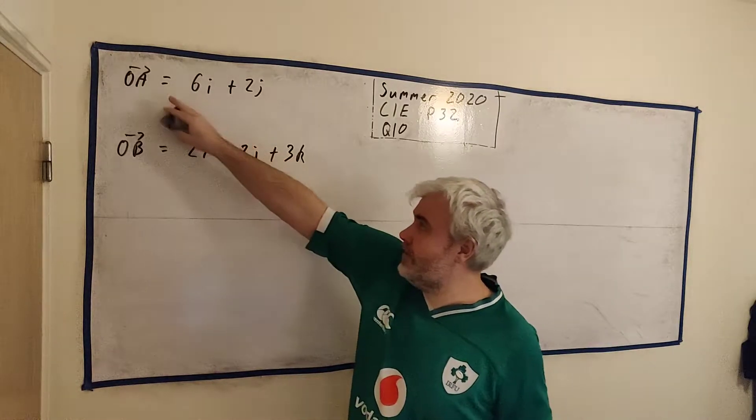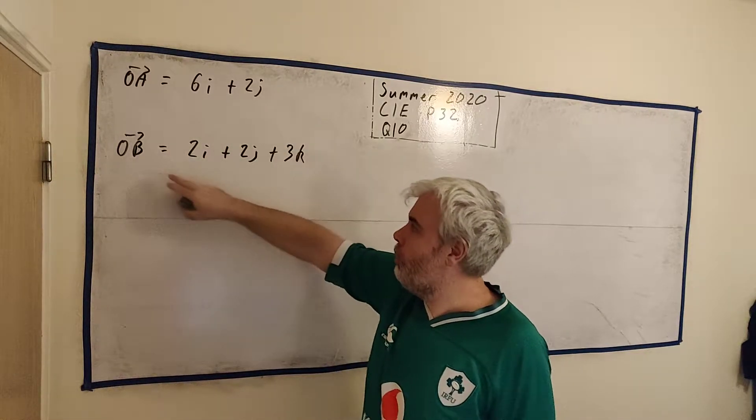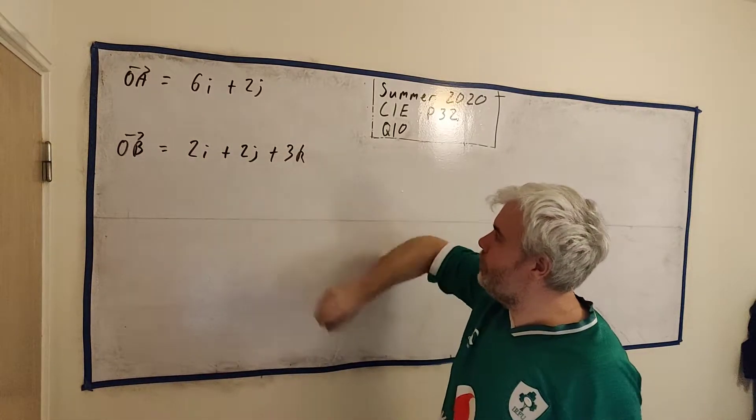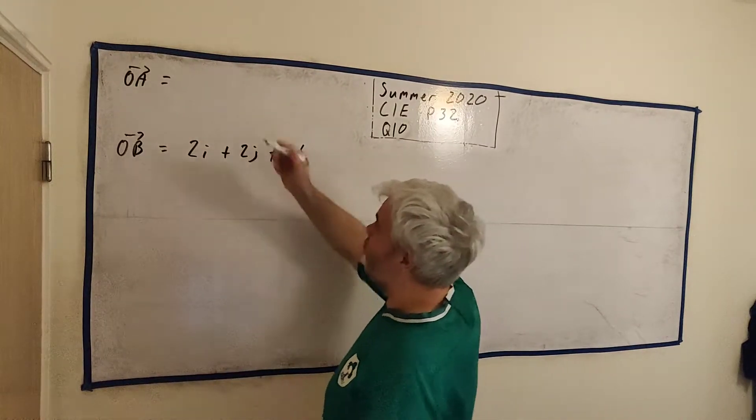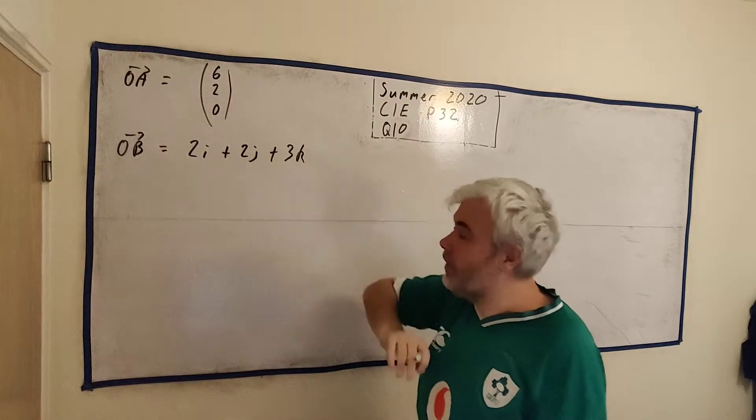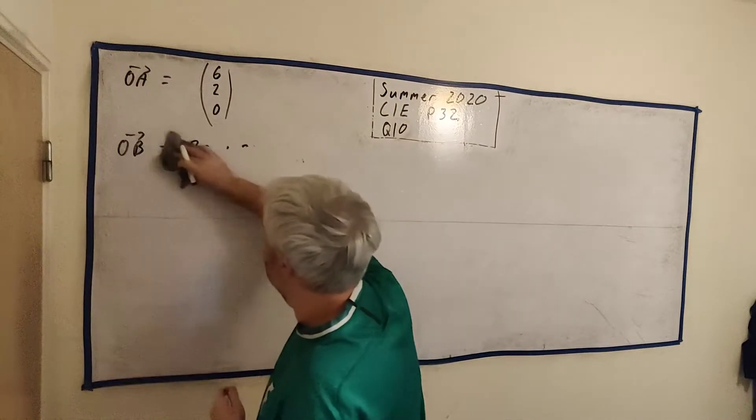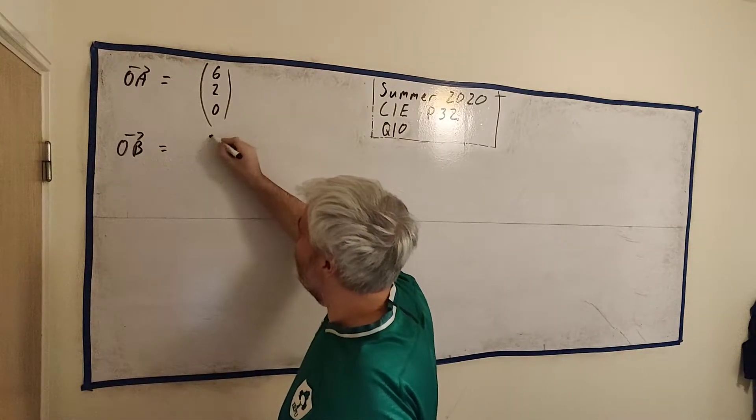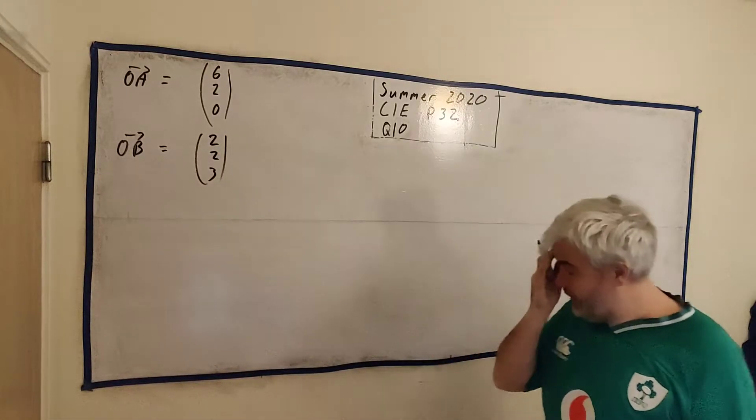First thing I'm going to do, this is the vectors they gave us. OA is equal 6i plus 2j. OB is 2i plus 2j plus 3k. I'm going to write them a little different just to save myself a bit of writing. So that's going to be (6, 2, 0). 6i, 2j, 0k. It means the same thing. And this one will be (2, 2, 3). Just to create a little easier to write. And we're going to be writing a lot of vectors in this question.